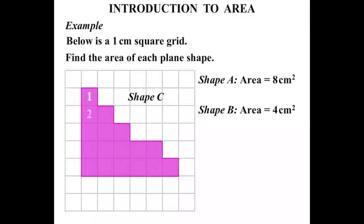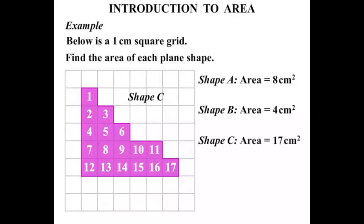One, two, three, four, five, six, seven, eight, nine, ten, eleven, twelve, thirteen, fourteen, fifteen, sixteen, seventeen. So shape C has an area of seventeen square centimeters.